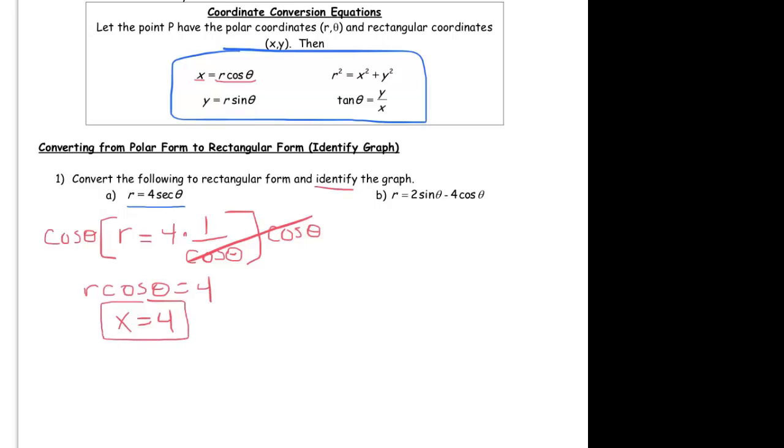And so we also have to identify the graph. This equation, x equals 4, is just a vertical line. It's a line in which the x coordinate is always 4. So this is a vertical line.